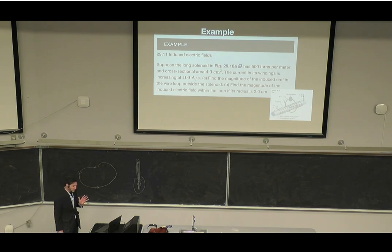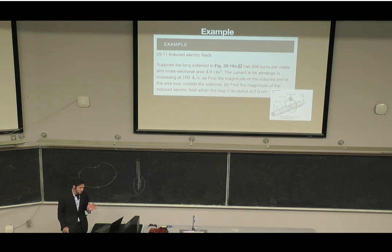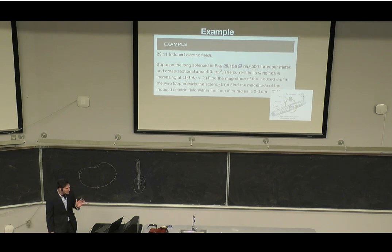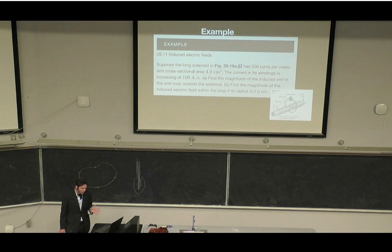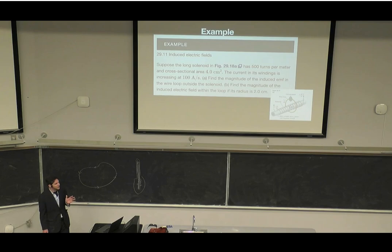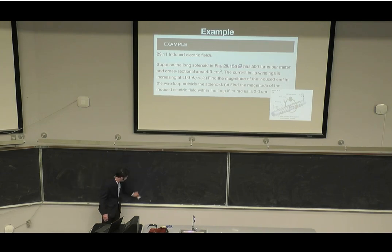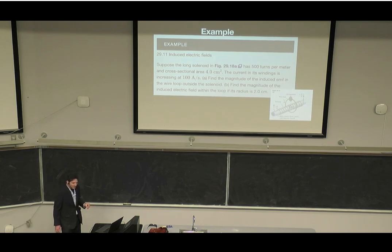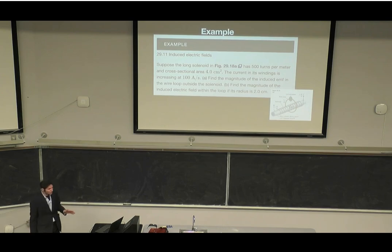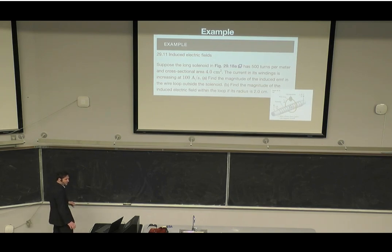Let's do an example. Suppose we have a solenoid with 500 turns per meter and a cross-sectional area of 4 cm². The current in its windings is increasing at 100 amperes per second. Find: (a) the magnitude of the induced EMF in a wire loop outside the solenoid, and (b) the magnitude of the induced electric field within the loop if its radius is 2 centimeters.